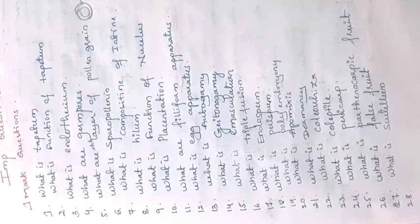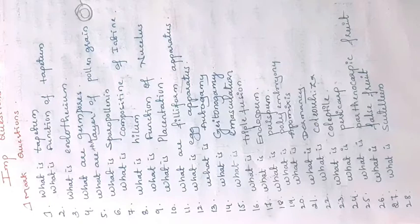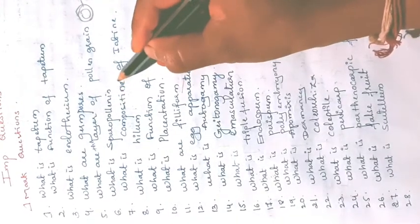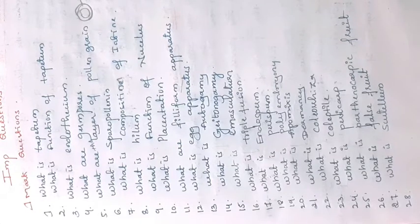What is sporopollenin? Sporopollenin is a chemical present in the exine layer of the pollen grain. The outermost layer is the exine and the innermost is the intine. The exine layer contains the chemical sporopollenin, which is the most resistant chemical.